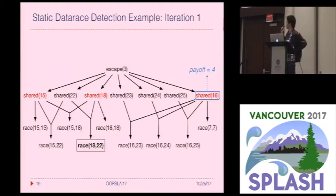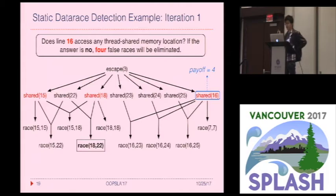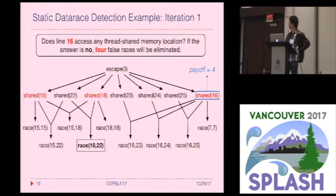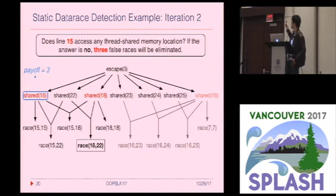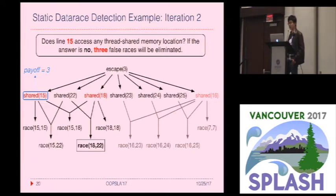This translates into the following text: 'Does line 16 access any shared memory location?' If the answer is no, four false races will be eliminated. We also display the expected payoff so the user can weigh the benefit-cost and decide whether to answer. Let's say the user confirms shared(16) to be spurious — this will resolve four false alarms. In the next iteration, we'll pick shared(15) as the question. Let's say the user confirms it spurious again.